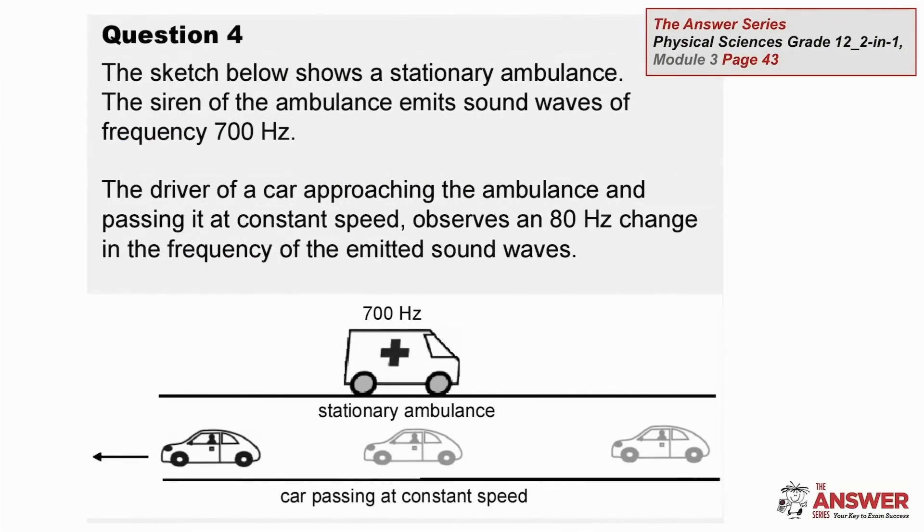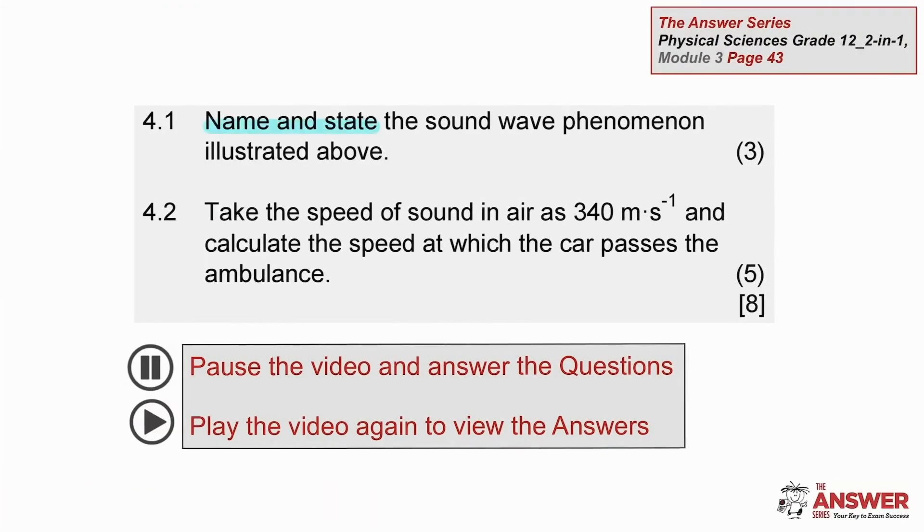In question 4, we have a stationary source of sound, the ambulance, and a moving listener, a car driving past. The difference between the perceived frequencies is 80 Hz. That's the size of the drop in pitch heard by the driver as they pass by the ambulance. We have to identify the phenomenon and then calculate the speed of the car. Pause or rewind the video at this stage to answer these questions. And then continue to play from here to view the answers.